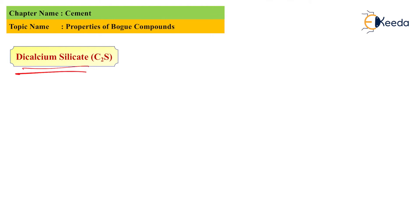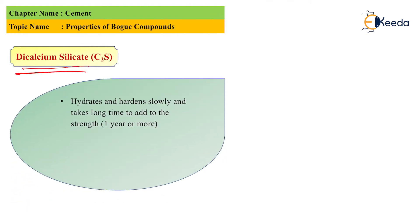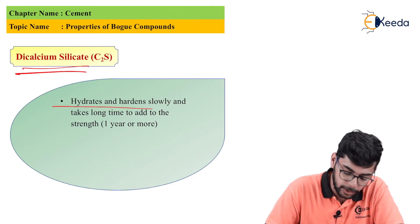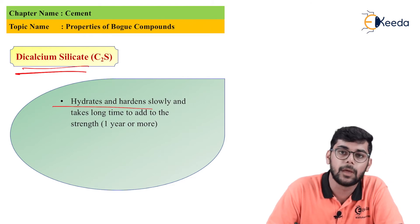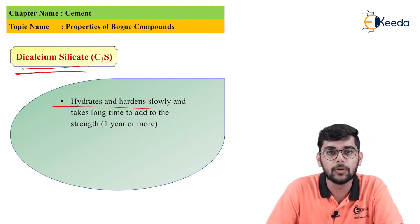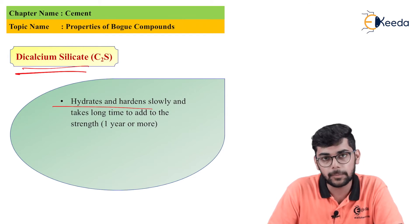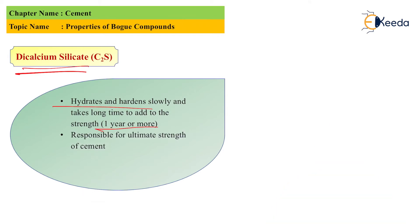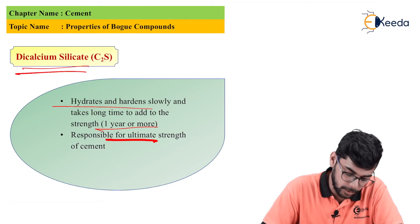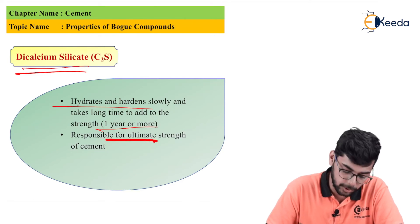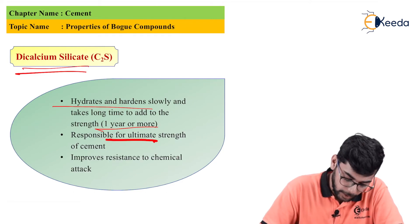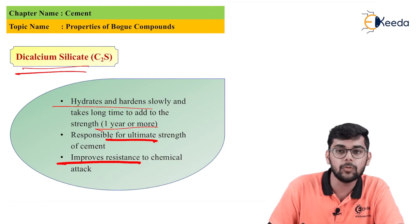Now let's talk about dicalcium silicate, C2S. C2S hydrates and hardens slowly, so it's responsible for ultimate strength. C2S is responsible for ultimate strength of cement and it improves the resistance to chemical attack.